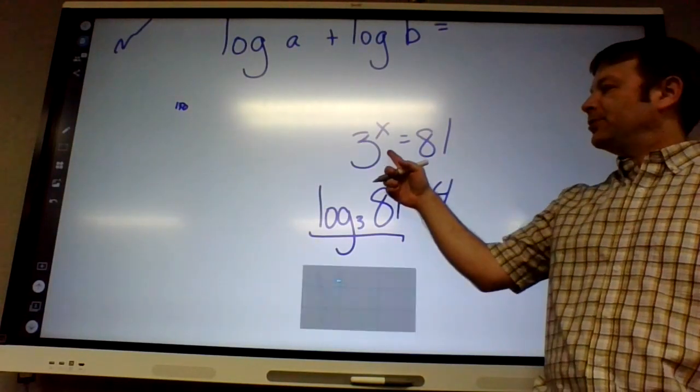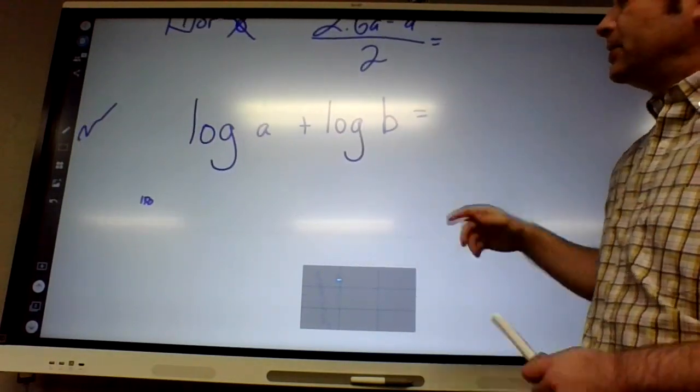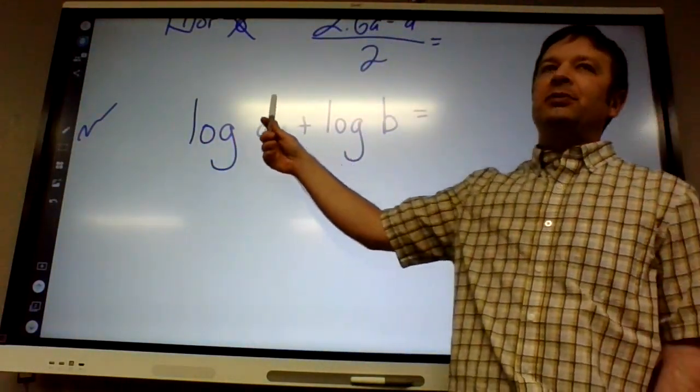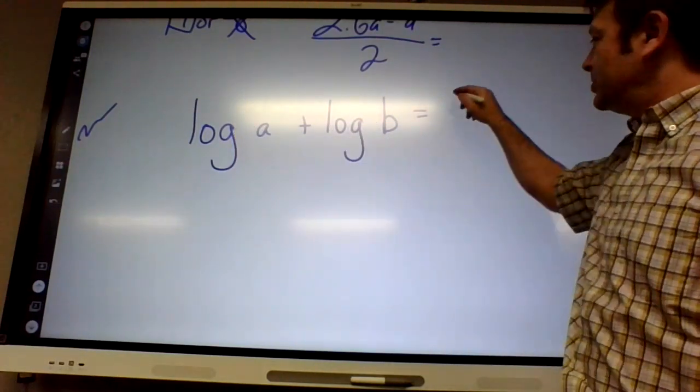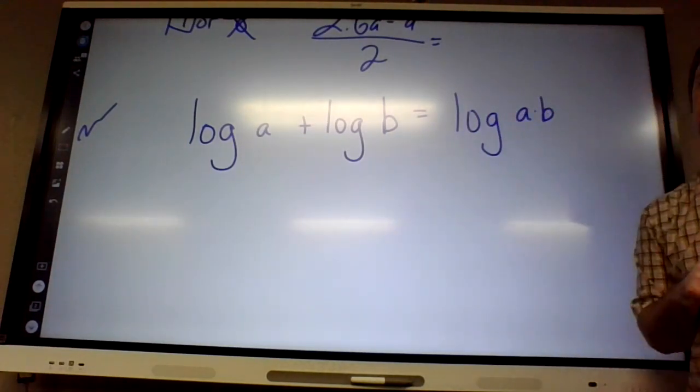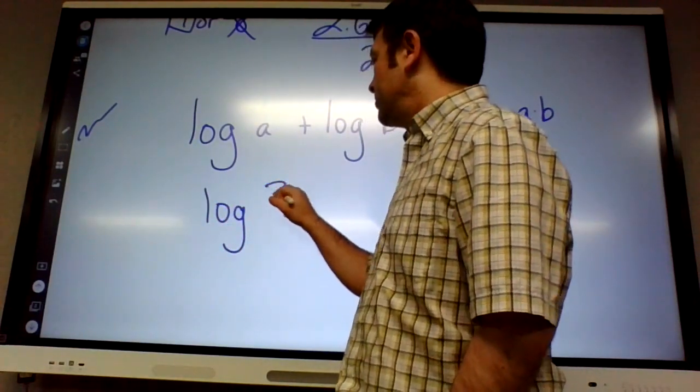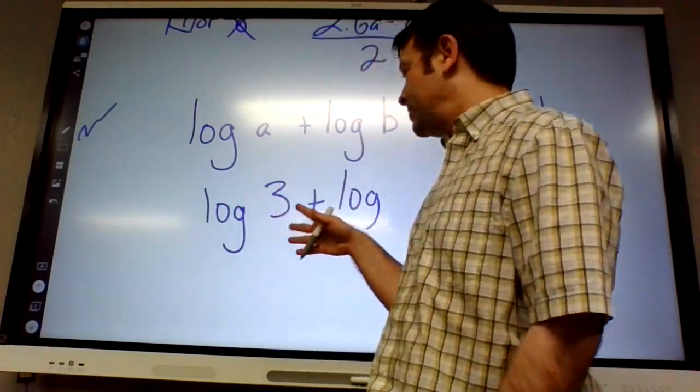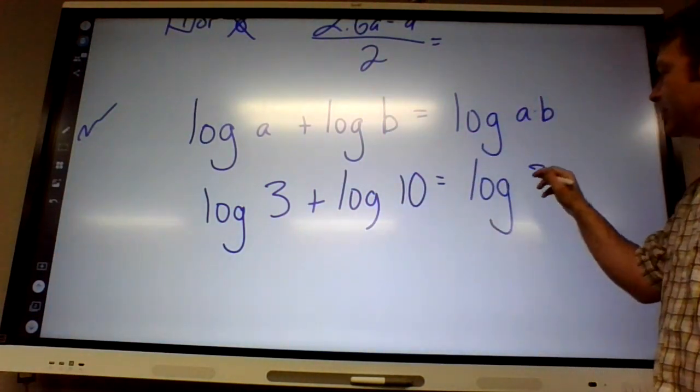Exponential form, logarithm function, log function. All right, today we're talking about special rules with logarithms. If you add log of a and log of b, then you'll get log of a times b. So a really quick example: if you have log 3 plus log 10, that would equal the common logarithm of 30.